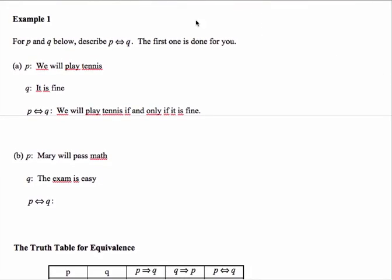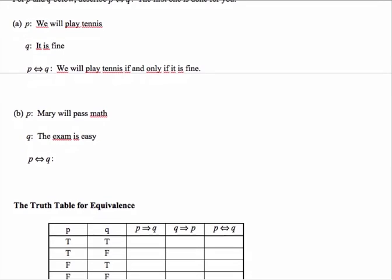Okay, so first example here we have, for P and Q below, describe P if and only if Q. The first one's done for you. Okay, so P is we will play tennis, Q is it is fine. P if and only if Q: we will play tennis if and only if it is fine.